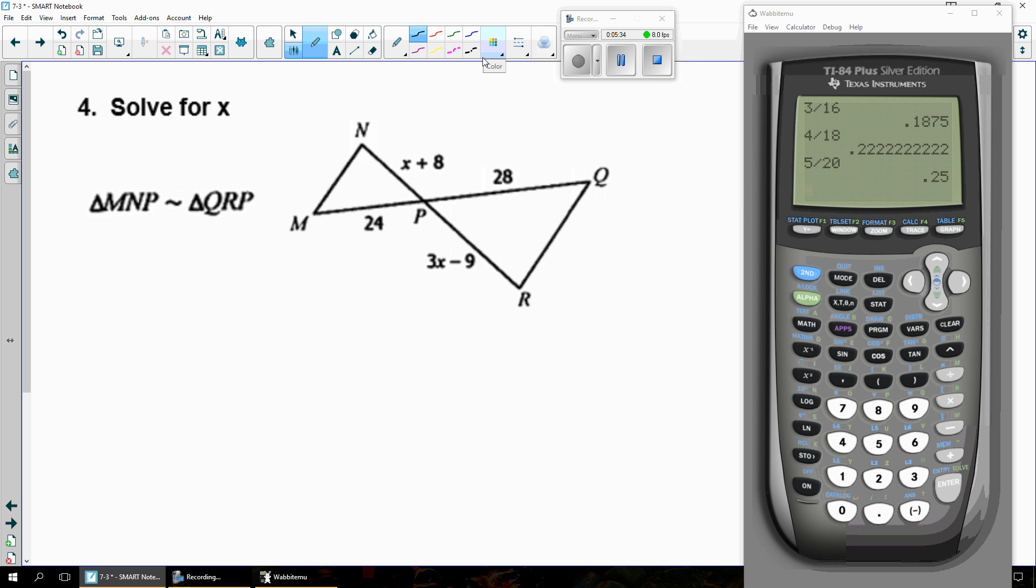And finally, we'll look at number 4. We have this bow tie looking thing. And again, they've given me some information about similarity. Remember the tilde right here means similar. So I'm going to look at the first two letters, M, N, and the first two letters, Q, R.